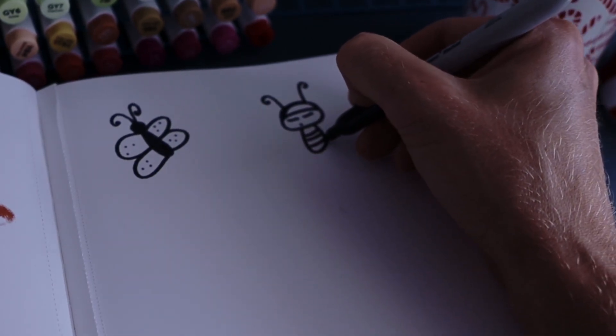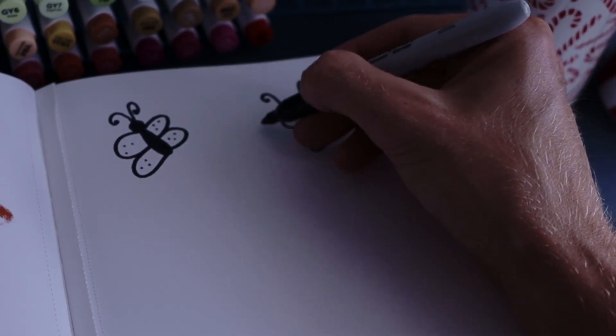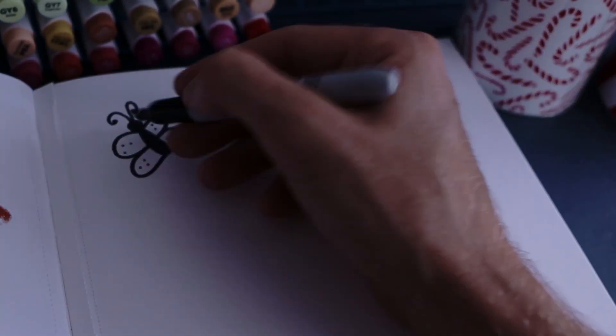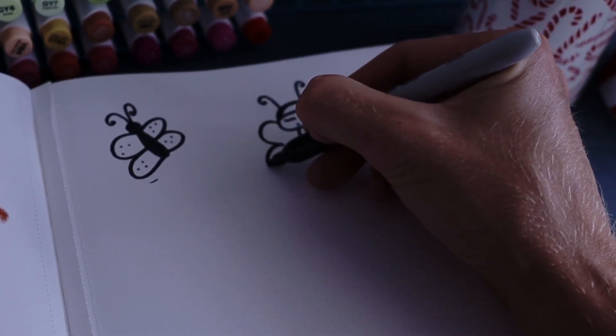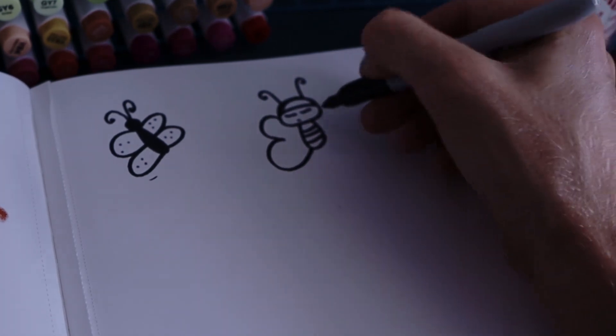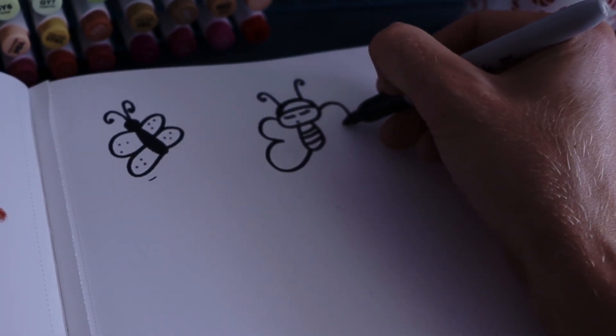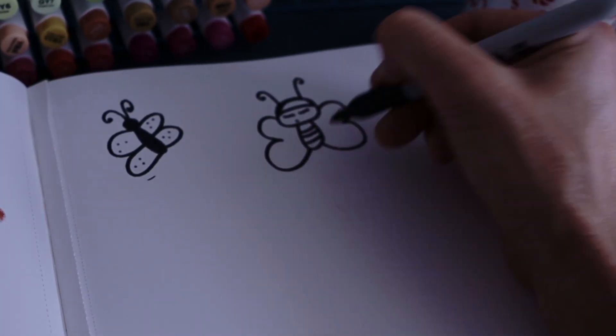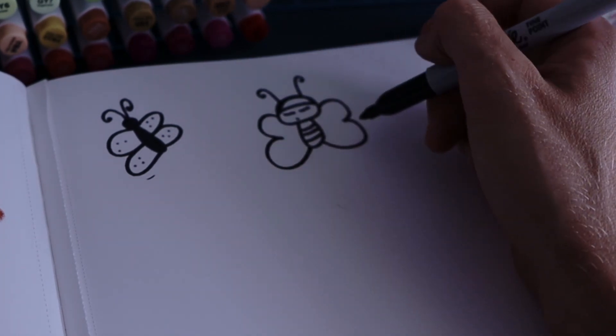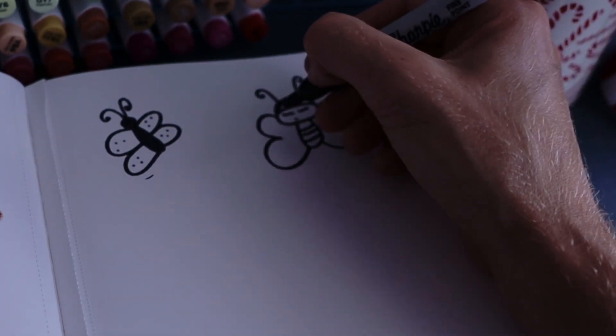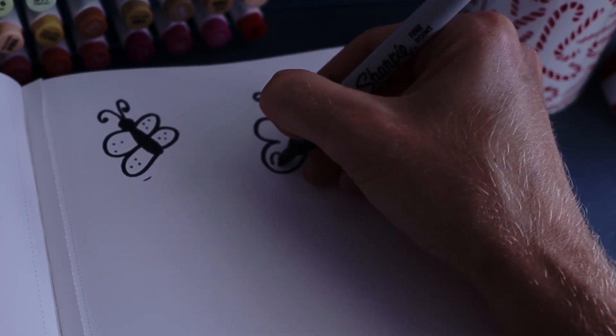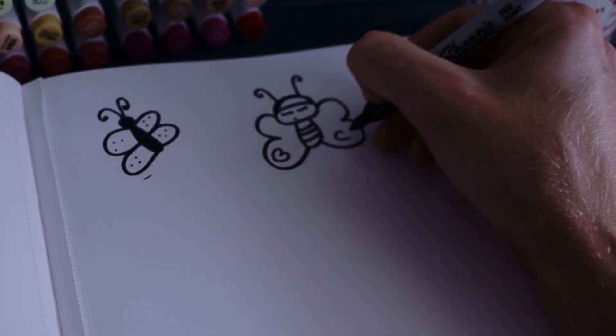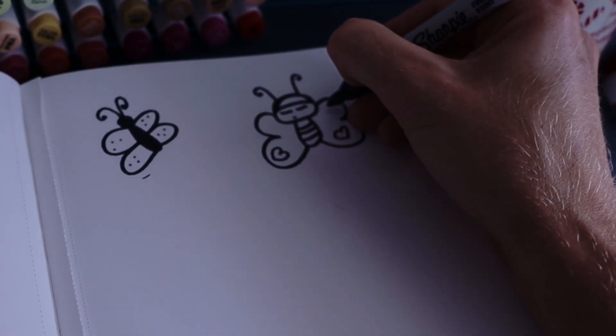And this time instead of doing the wings where you do two wings, we're going to do one continuous wing, like a bit like a letter B or a heart. So that's like a backwards B and that's like a normal B. And then maybe we could put some love hearts for decorations and some spots up here.